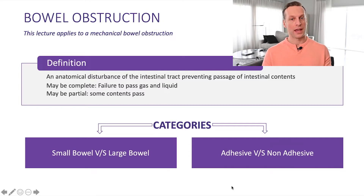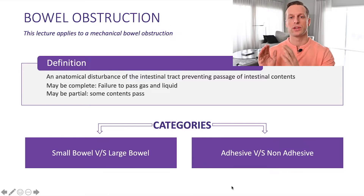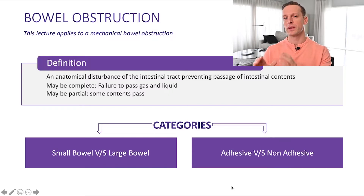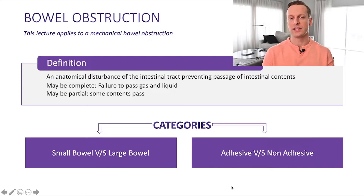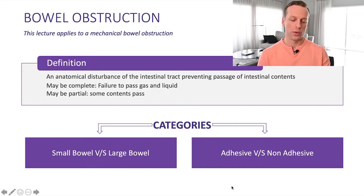When we talk about mechanical bowel obstructions, we should break them down into two broad categories. The first is anatomy — is it a small bowel obstruction or a large bowel obstruction? The other is whether the bowel obstruction comes from an adhesion or a non-adhesive cause. Non-adhesive bowel obstructions inevitably need surgery or some form of intervention.